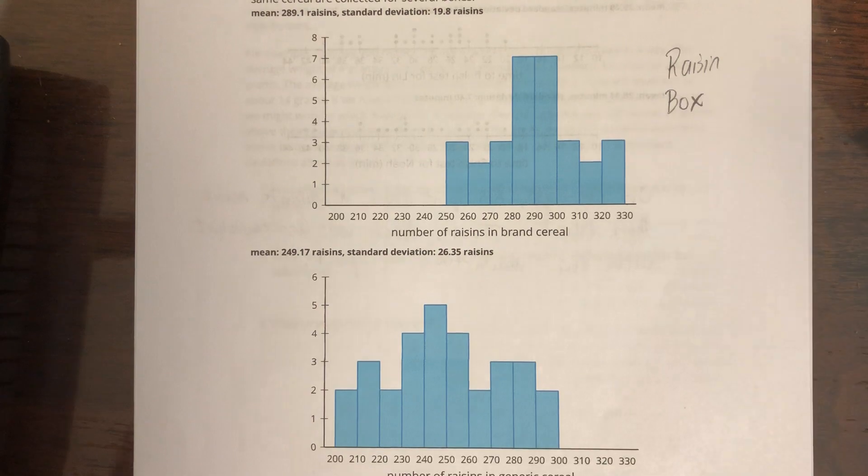All right, so I mean I can just tell by looking at these, which is sort of nice about a histogram, that this is wider than this one. They use the same scale, so it is nice I can compare them like that.